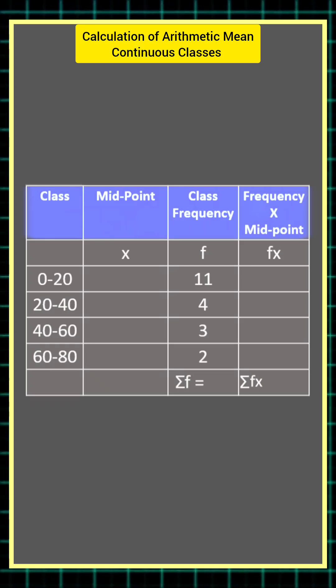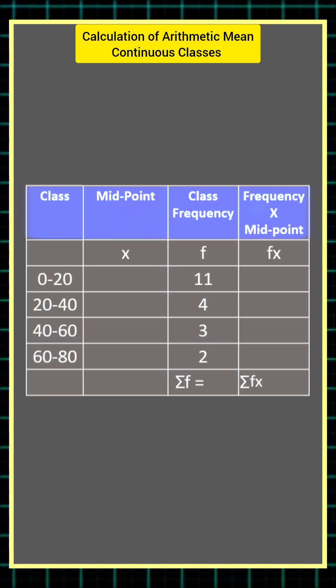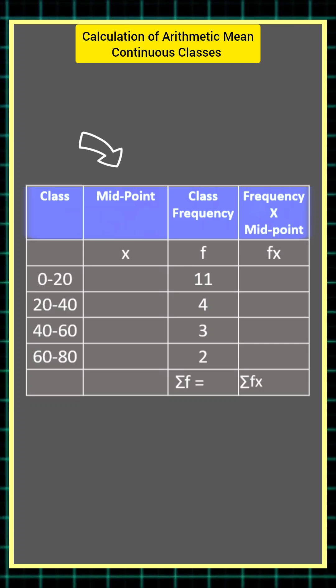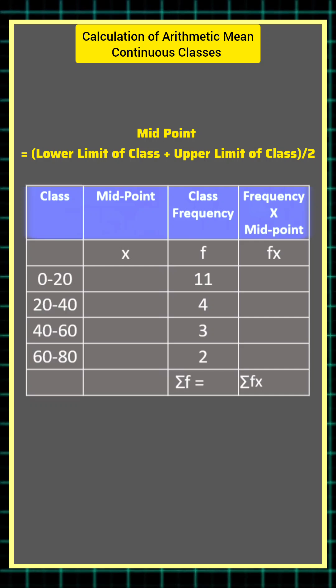We are given classes and their respective frequencies in the equation. The first step is to calculate midpoint. The formula for calculating midpoint is lower limit plus upper limit divided by 2.